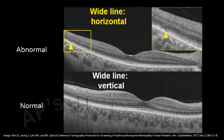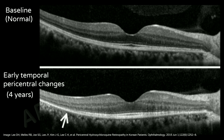Recently, some studies have shown a more peripheral site for early onset of hydroxychloroquine toxicity in Asians, where the early lesions have been shown to be pericentral rather than parafoveal — in the temporal region first. A wide horizontal line scan has therefore been recommended in Asians in order to pick up these early signs. This is another Asian patient with early pericentral changes.